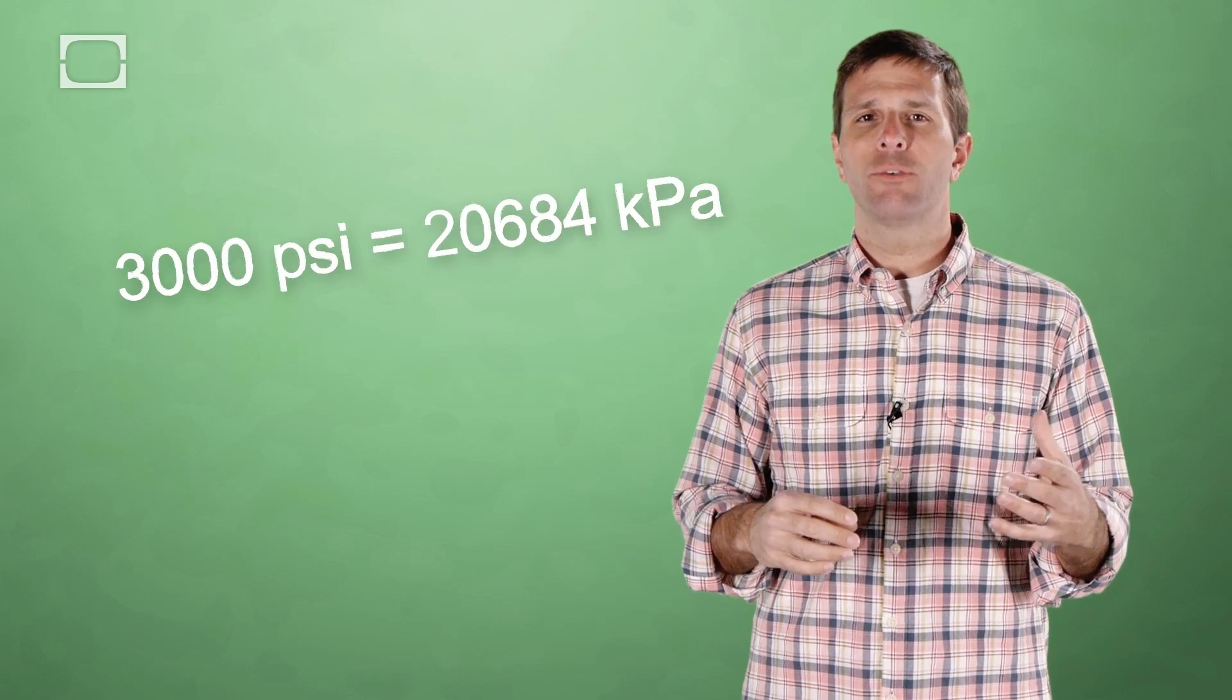When that firing pin hits, it ignites the gun powder located in the shell which explodes. It explodes into pressurized gas at about three thousand pounds per square inch. That forcefully pushes the bullet out the end of the barrel and makes quite a bit of sound like kind of a deadly champagne cork popping as the bullet comes out.